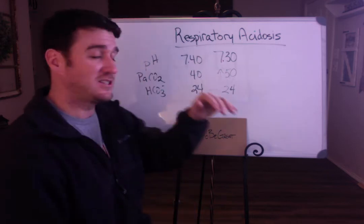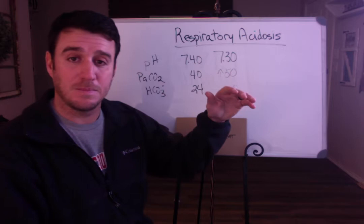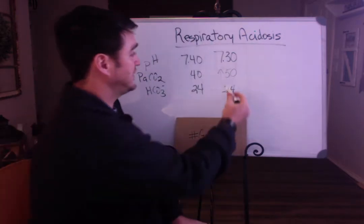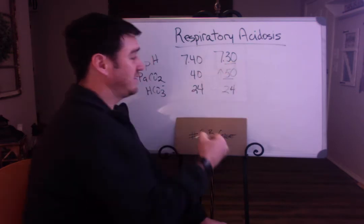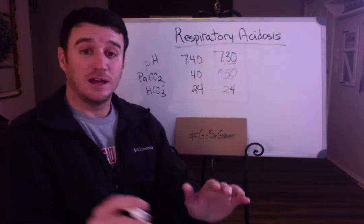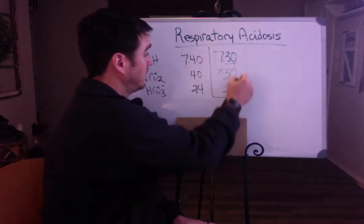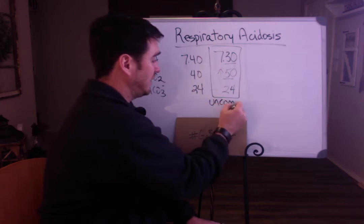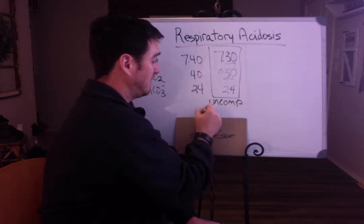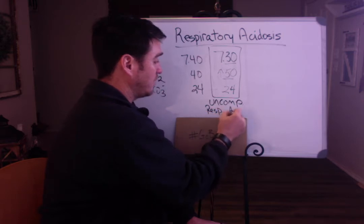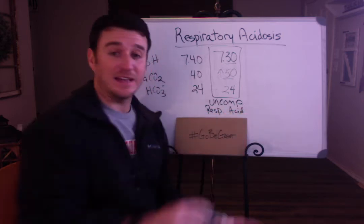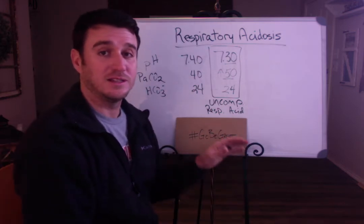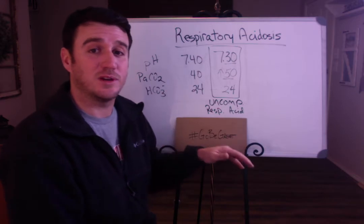I'm not teaching you to pass your boards — I'm teaching you to be a quality respiratory therapist. As carbon dioxide builds up, that's an increase in acid, and your pH will go down. So as CO2 goes to 50, pH goes down to 7.30. This is what we would call an uncompensated respiratory acidosis.